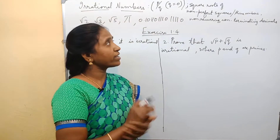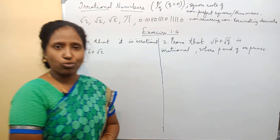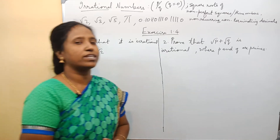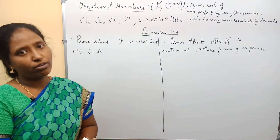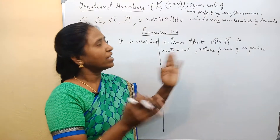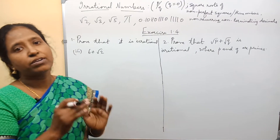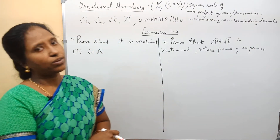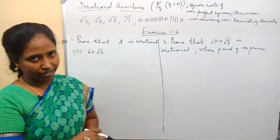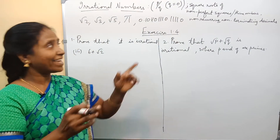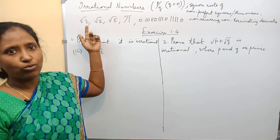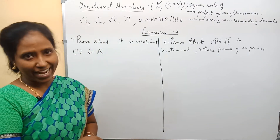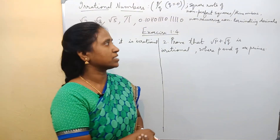And then, square roots of non-perfect squares. When we find the square root of non-perfect squares, generally the prime numbers remain inside the square root because they are non-perfect squares. That time they form surds — root 2, root 3, root 5 are called surds. These are also irrational numbers.